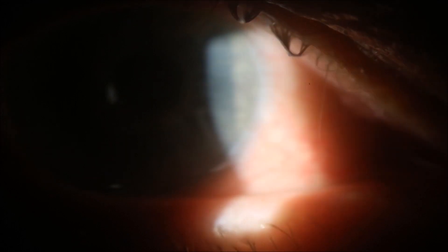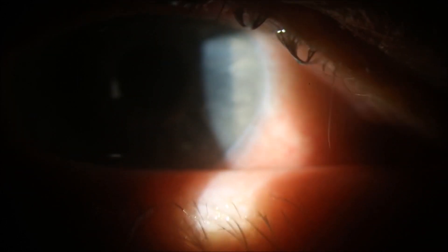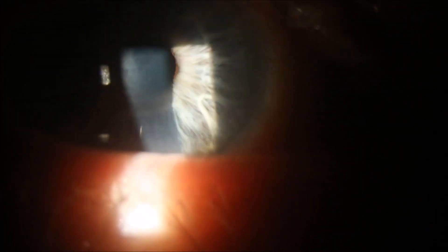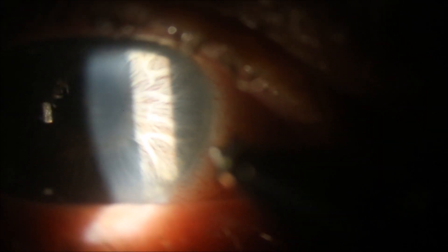A 6mm incision will correct approximately 1 diopter of corneal astigmatism. You can see here we're drawing our attention to the nasal limbus, right in clear cornea.